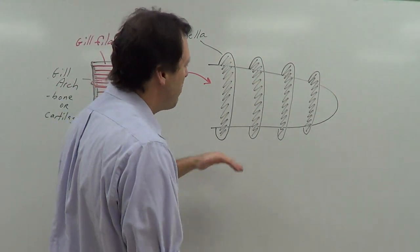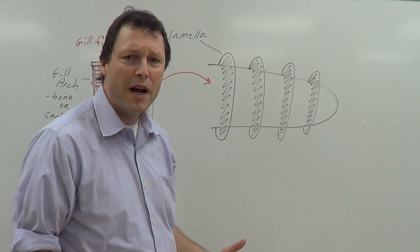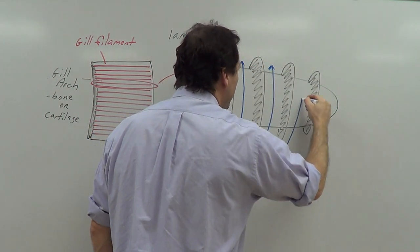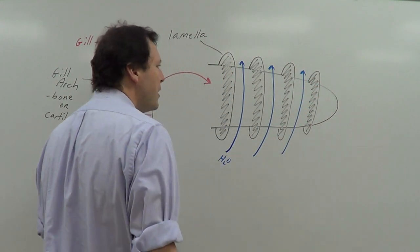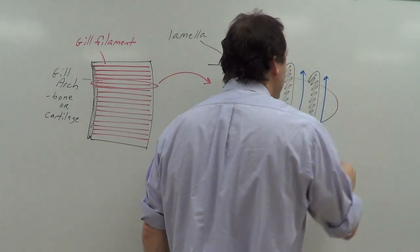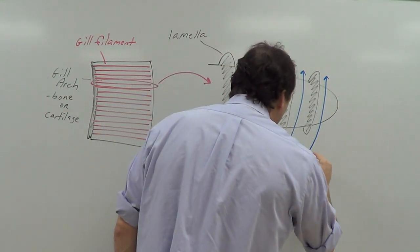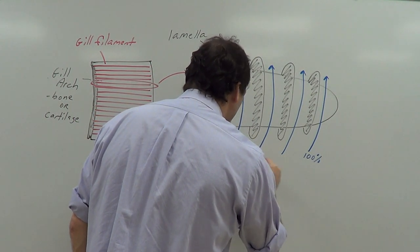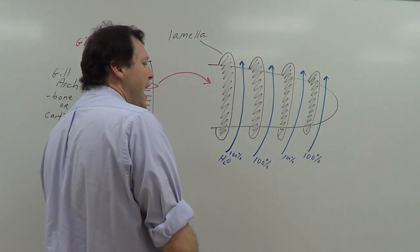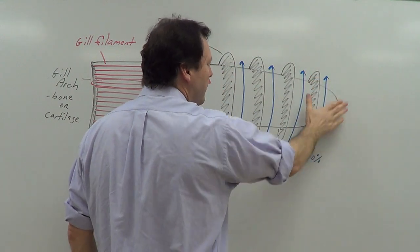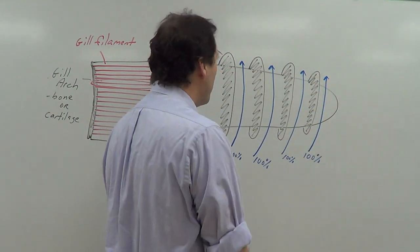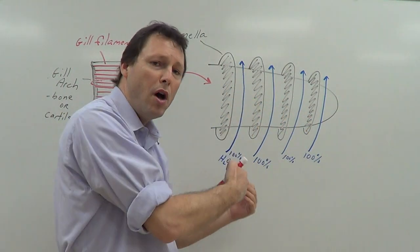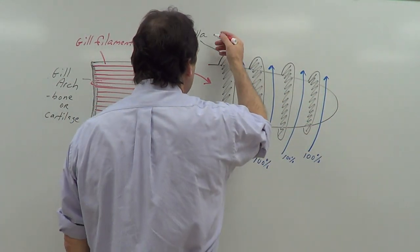Now I want to put some water going over this gill filament — the water doesn't go just any direction, it's going to go a certain direction. Let's label that water H2O. Let's suppose that water is 100% oxygenated — meaning it contains as much oxygen as it possibly can. As that water moves over the gill, oxygen is going to get removed from that water and this number is going to go down. I'm also going to add some blood vessels here, because that's where the diffusion is going to occur — between the blood in the blood vessels and the oxygen in the gills.